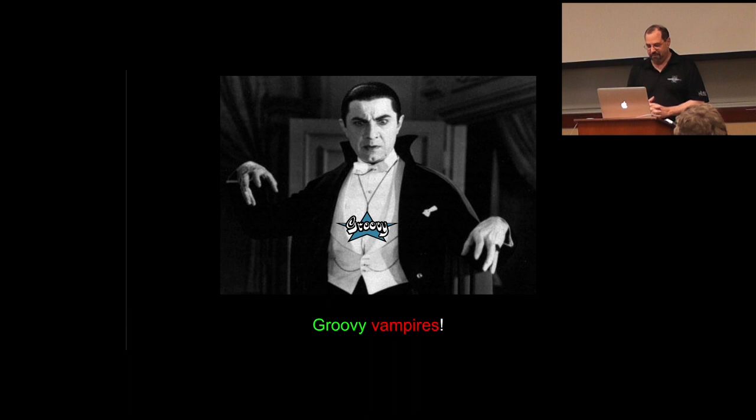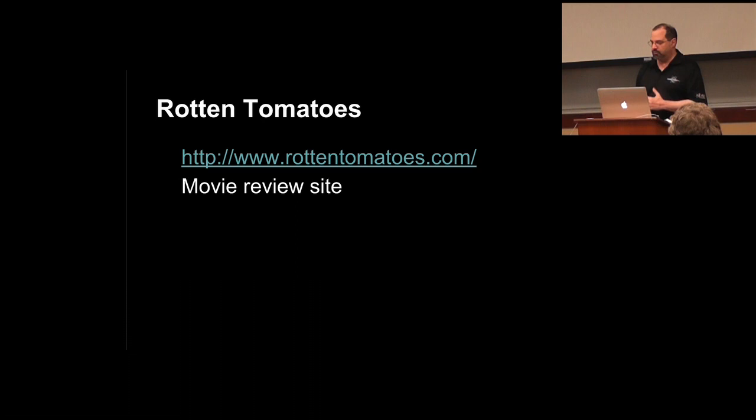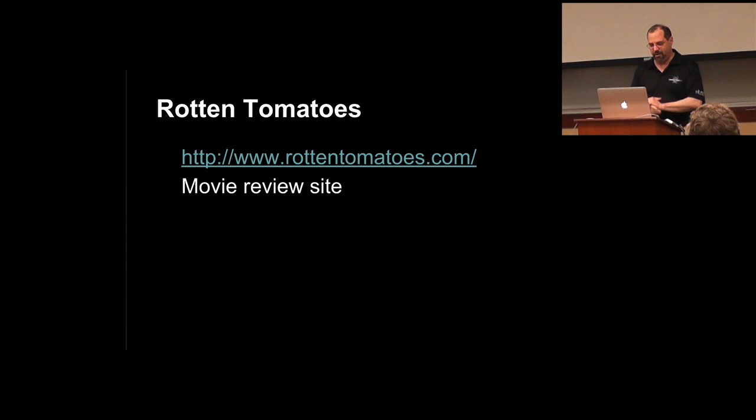My first thought was to go to IMDB and see if they have a RESTful API, but they really don't have much of anything useful. It turns out the Rotten Tomatoes website, where they do movie reviews, has both critics reviews and audience reviews with scores, and if it's above 50% it doesn't look like a rotten tomato. And they have a RESTful API.